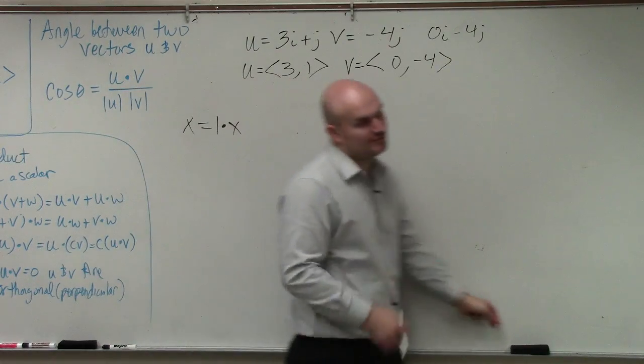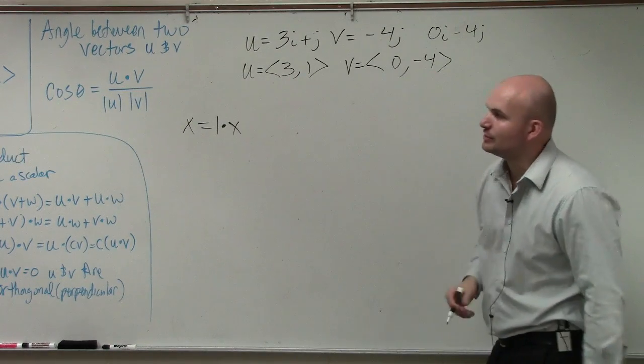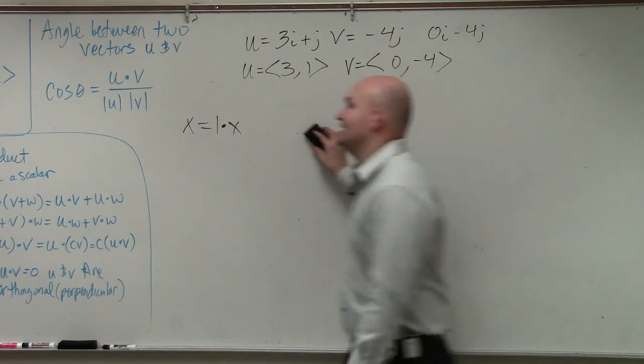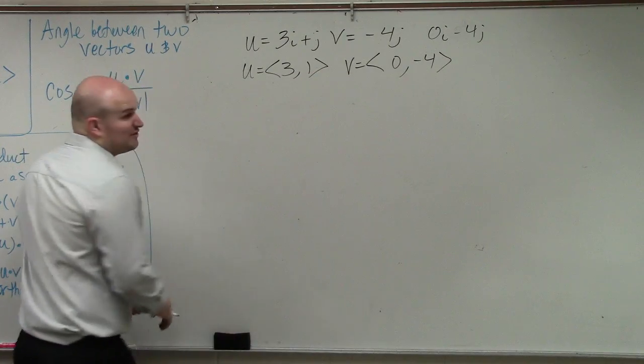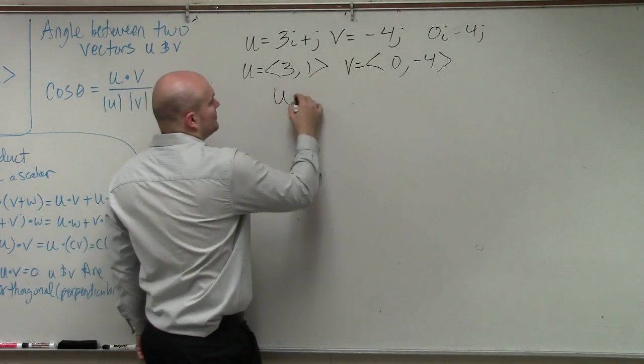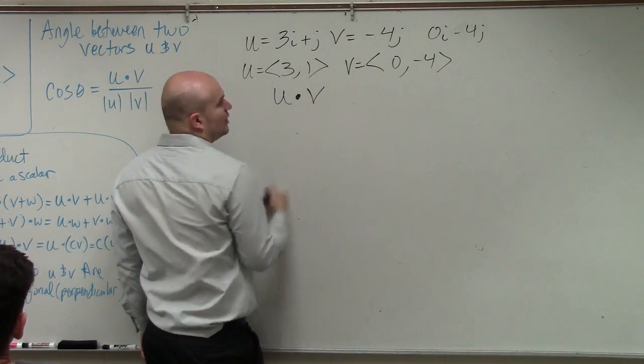Now, if you look at the formula here, we have cosine of theta equals the dot product of u and v over the magnitude. So the first thing we need to do is the dot product of u dot v.